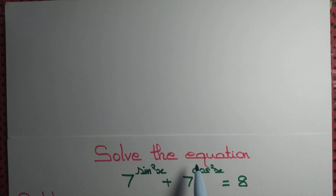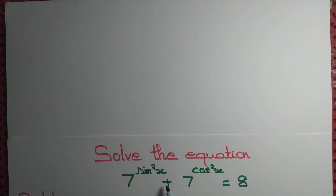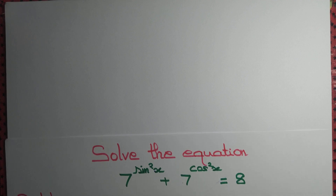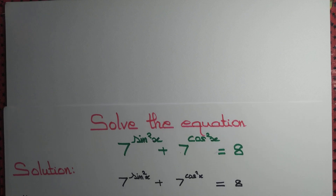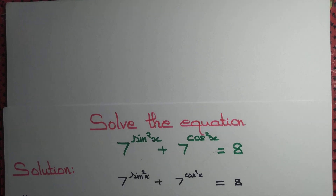Let us solve the equation 7 to the power sine square x plus 7 to the power cos square x equal to 8. We want to solve this equation — let's call this equation 1.